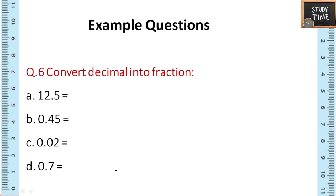Next 10 paise, next 75 paise, next it is 50 paise. 6th question: convert decimals into fraction. 12.5 can be written as 125 by 10. So 0.45 can be written as 45 divided by 100. 0.02 can be written as 2 by 100. 0.7 can be written as 7 by 10.